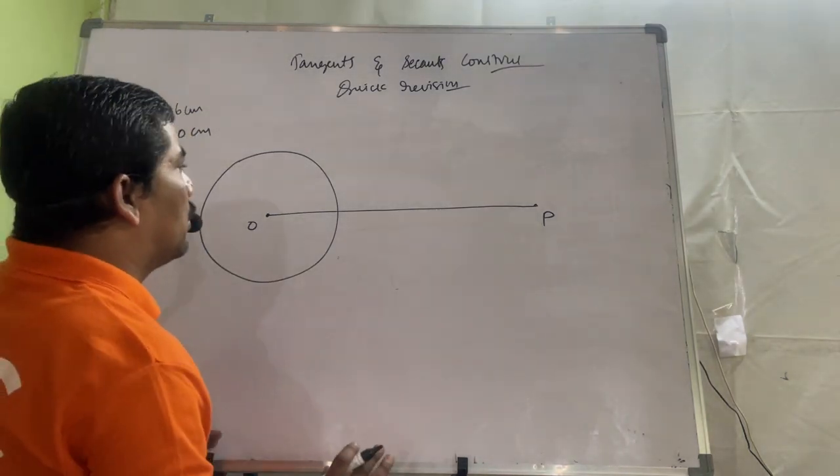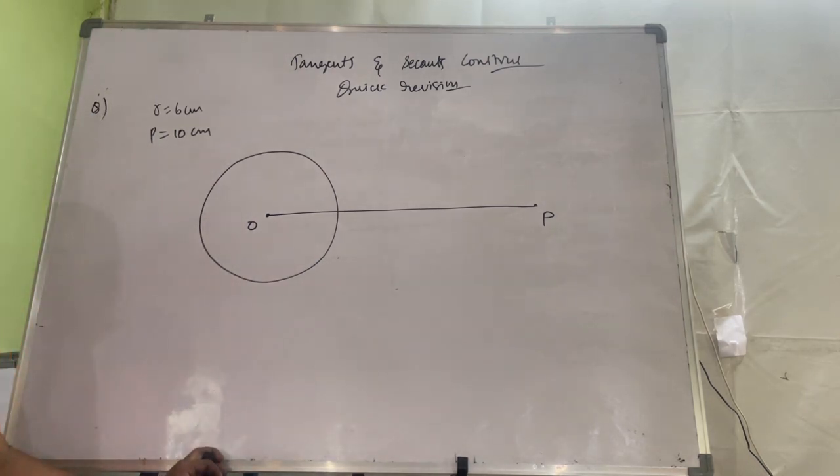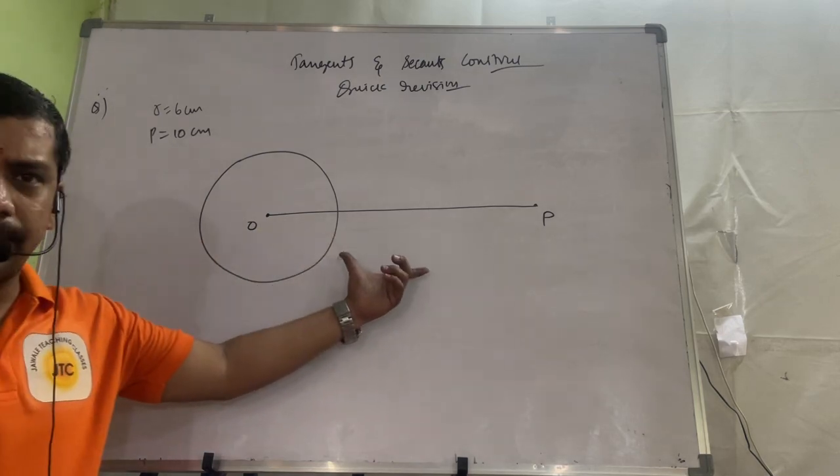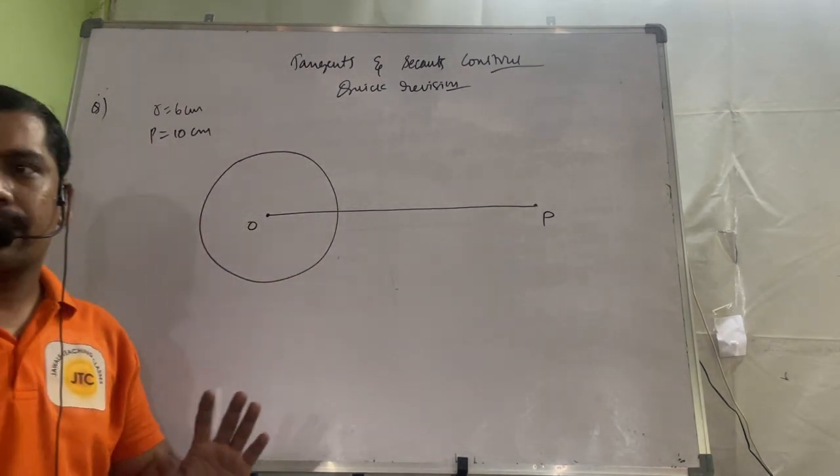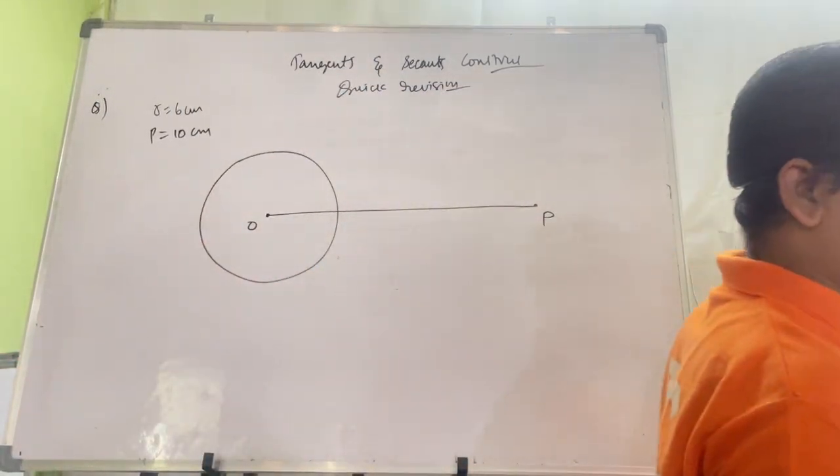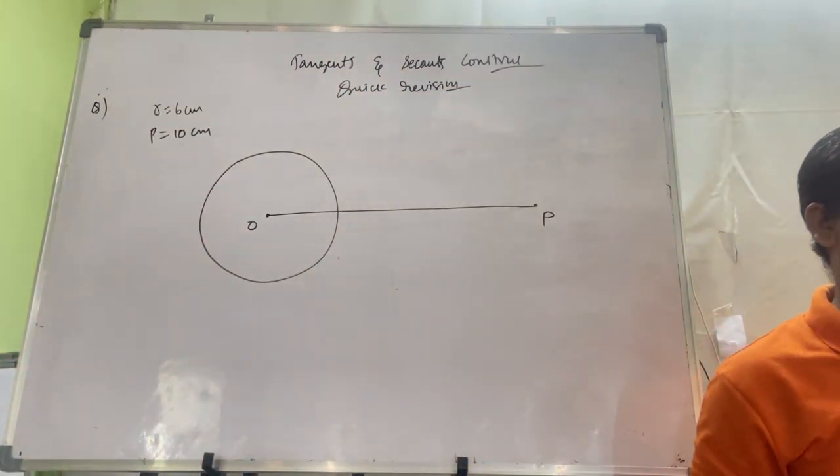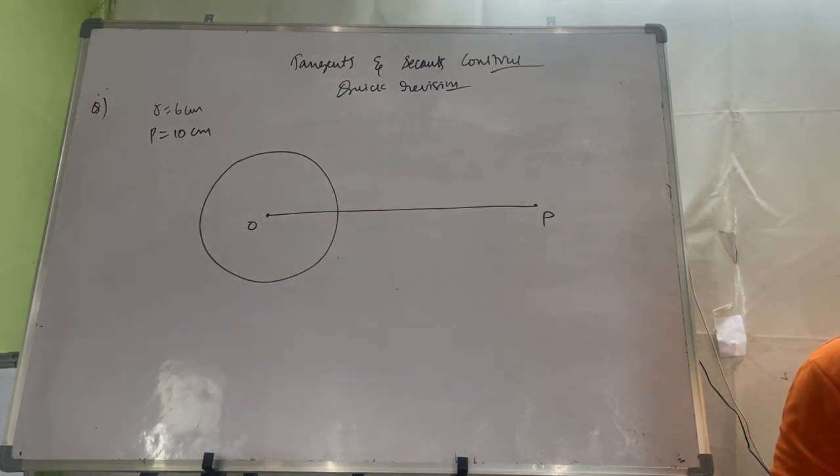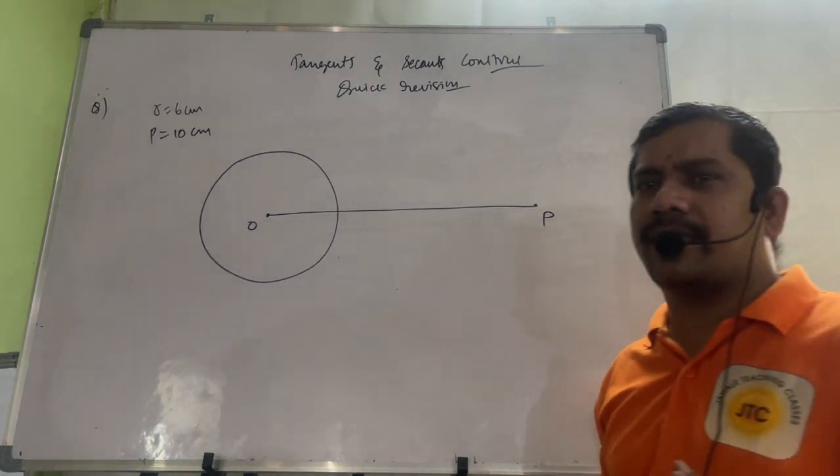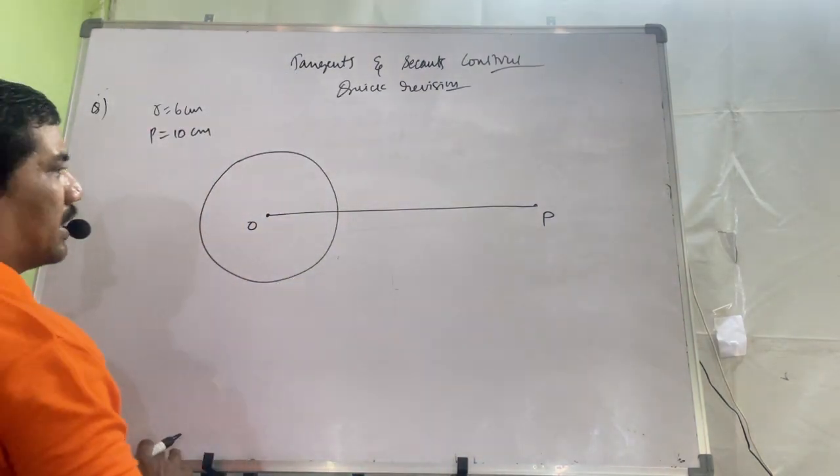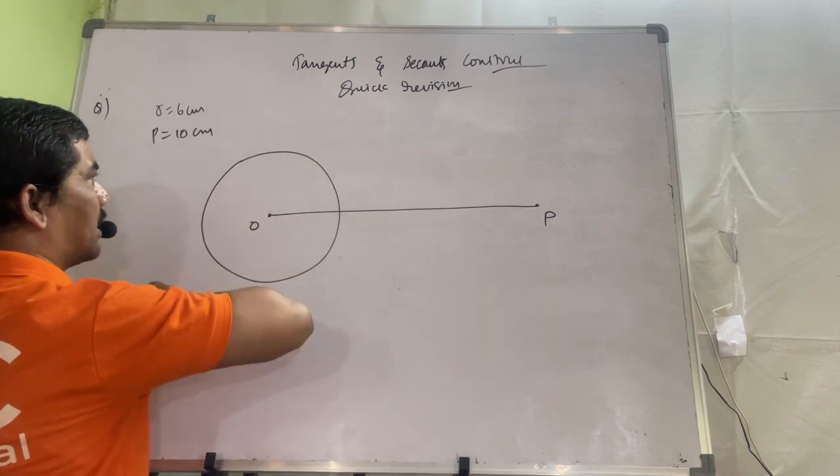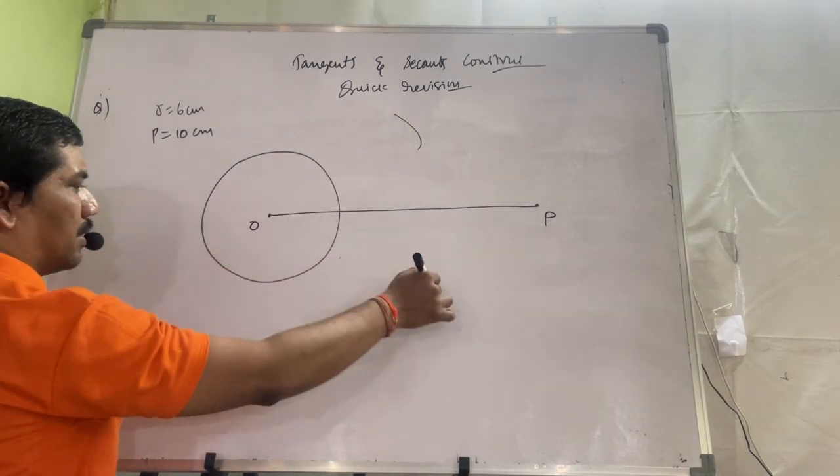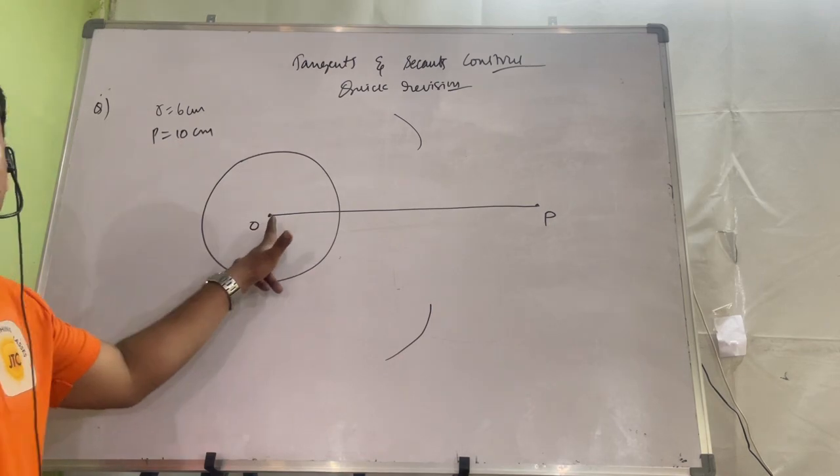First step is drawing the circle, second step is taking the point. Now you have to draw perpendicular bisector of OP. Perpendicular bisector means you have to take the compass. Now it is 10 cm, half will be 5, more than 5 you take - 6, 7 anything. Don't take 9, very long ones. Keep that compass one end here and mark it, make an arc.